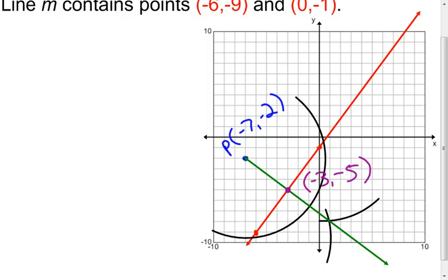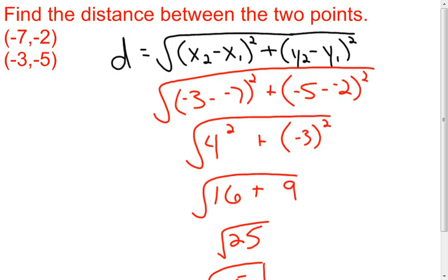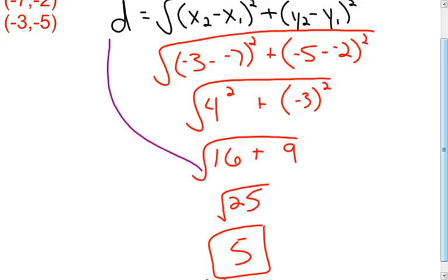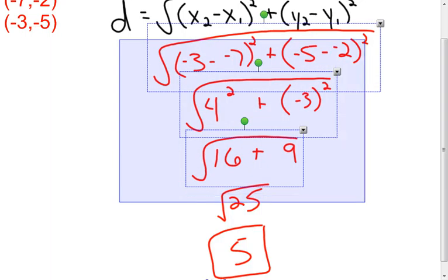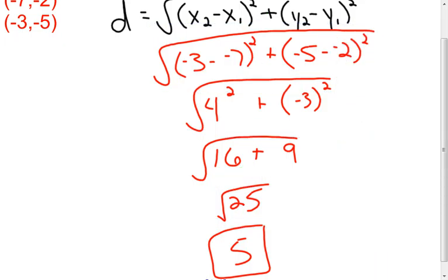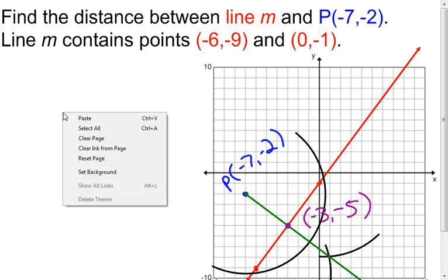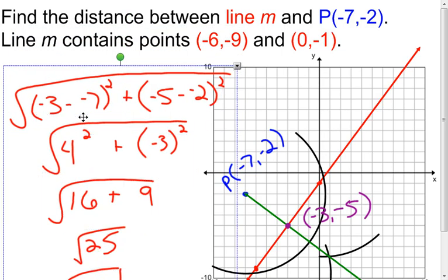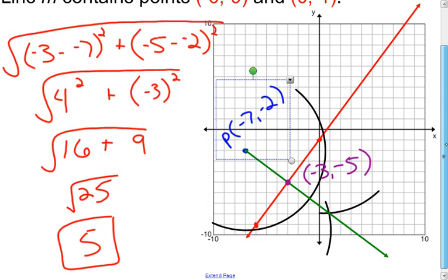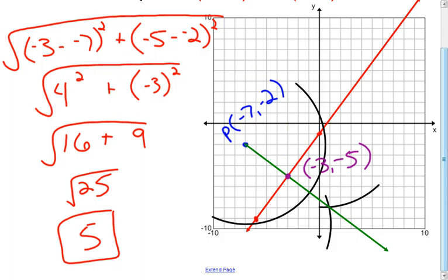I'm now finding the distance between two points — my problem has come down to that. I asked you to find the distance between negative 7, negative 2 and negative 3, negative 5. Instead of me redoing the whole problem, I'm going to copy everything I did at the beginning and paste it. So here is all my work for this problem. We needed to do the construction on the graph to find this point, and we just put it into our distance formula and find out that the blue point is 5 units away from the red line.